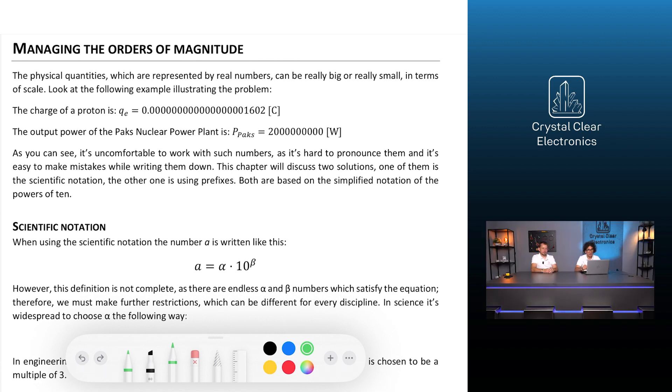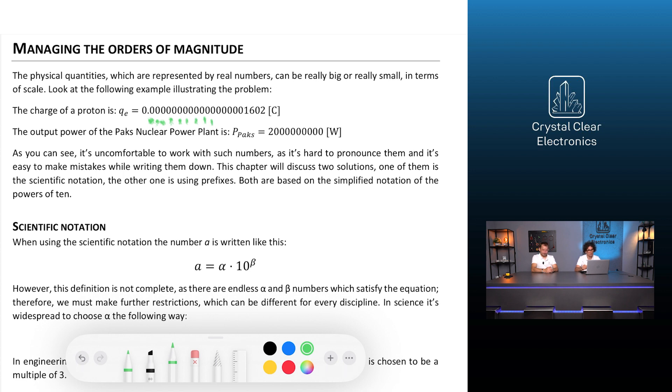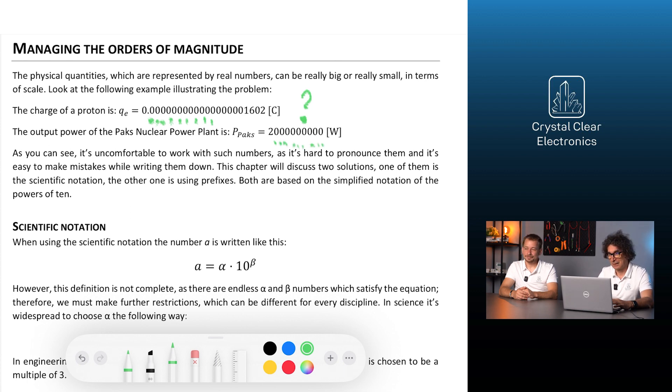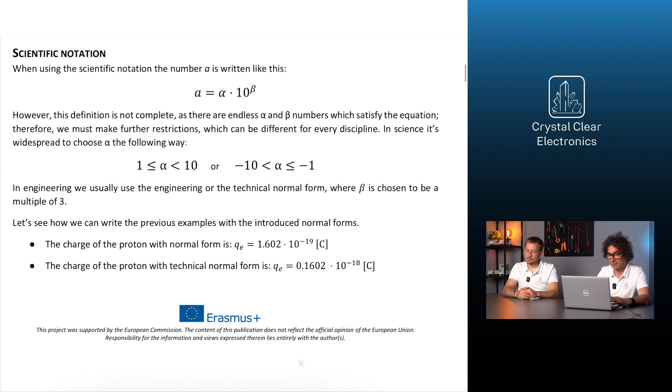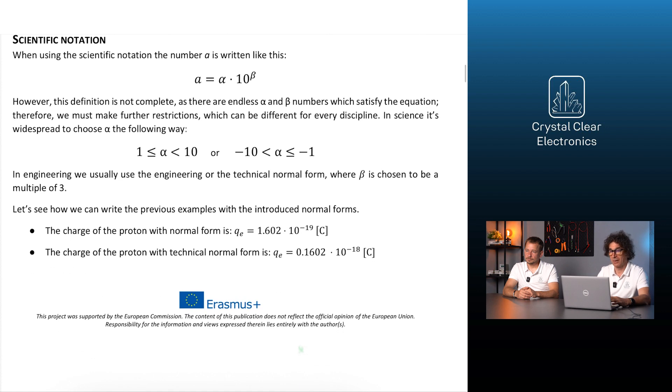The charge of a proton is q sub e equals 0.00000, a lot of zeros still 1602 coulombs. The last digits are 1602. The output power of the Pogsch nuclear power plant is p sub Pogsch equals 2.00000000 watts. As you can see, it's quite uncomfortable to work with such numbers, as it's hard to pronounce them and it's easy to make mistakes while writing them down.